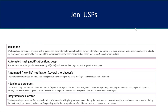General rule: every time you introduce a file into the root canal system it should be followed by irrigation and recapitulation. I irrigate with 5.25% sodium hypochlorite. A common question is: why use such a high concentration when lower concentrations have been shown to be just as effective at killing bacteria? Yes, they are equally effective at killing bacteria, but high concentrations dissolve necrotic pulp tissue much more quickly, which helps effectively remove infected soft and hard tissue.